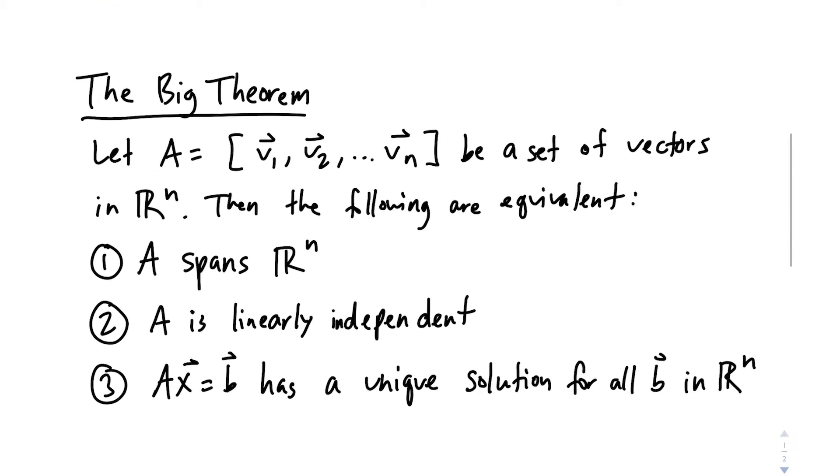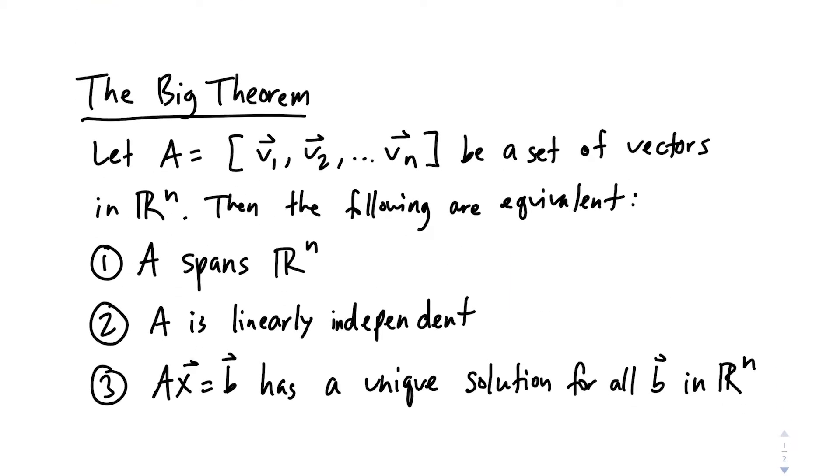So I'd like to bring your attention to the big theorem, which might just be one of the dumbest name theorems I've ever heard of in my life, but I guess it's the foundation of linear algebra or whatever. Let's move on. So we're going to say that there's some A that is a set of vectors from v1 to vn in Rⁿ, then we can say the following are equivalent. So if any of these things is true, then the rest of the things that are listed here are also true.